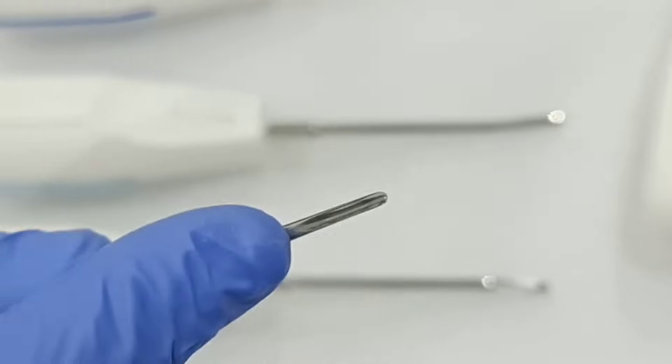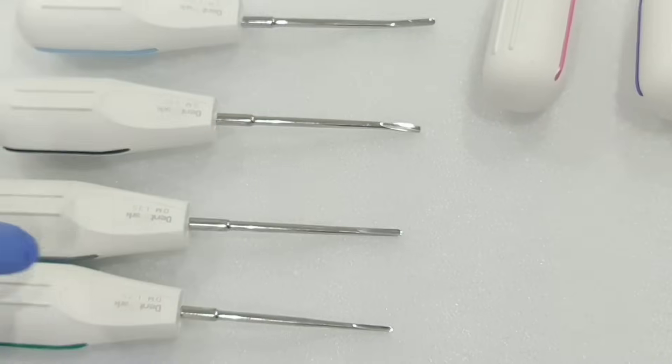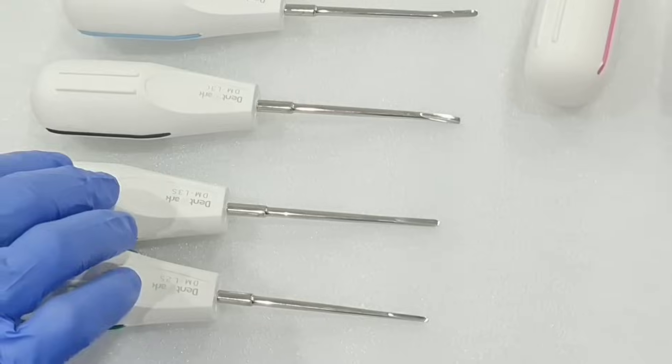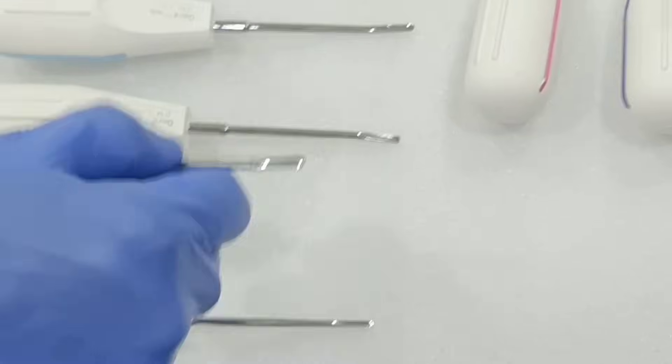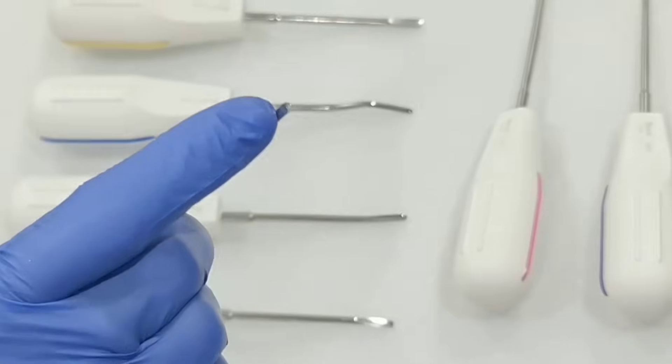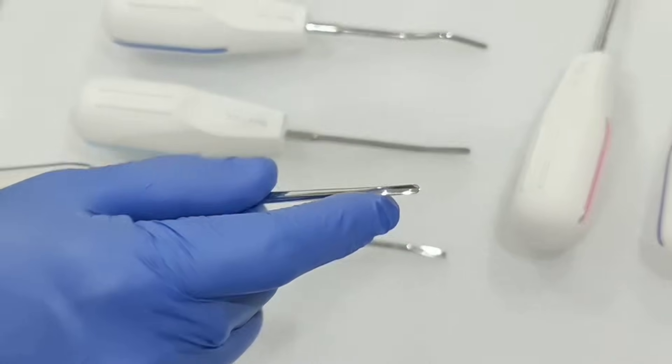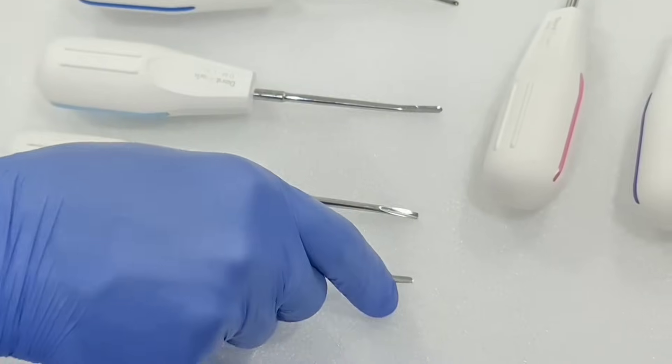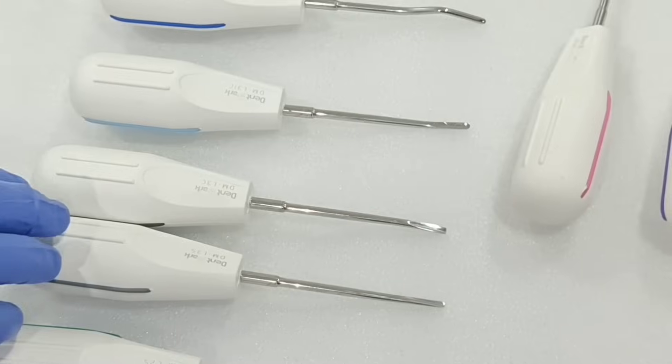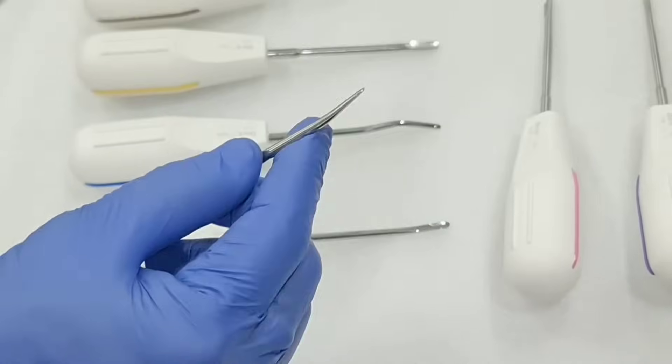And another is L3S. This is 3mm head size with the round edge and the straight. This is for interproximal. And another is L3C, this is curved. You can see it is curved behind with 3mm head size.